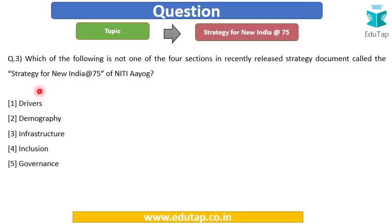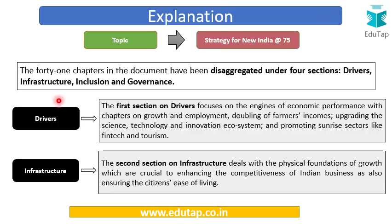Next question: Which of the following is not one of the four sections in the recently released Strategy for New India @75 by NITI Aayog? Options are: Drivers; Demography; Infrastructure; Inclusion; and Governance. We have already discussed how 41 areas or 41 chapters have been covered in this document.